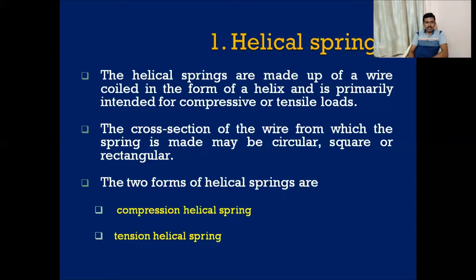Based on the load to which it is subjected, helical springs are of two types: compression helical spring and tension helical spring. In the compression helical spring, initially the coils are spread and not in contact with each other — the coils are distanced with a gap. When compressive load is applied, the coils come closer to each other and contact each other, giving the deflection and straining of the spring.